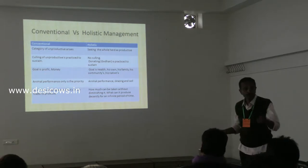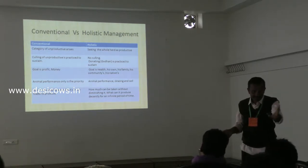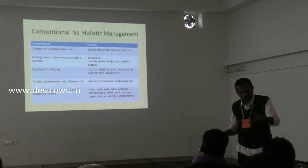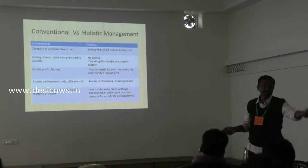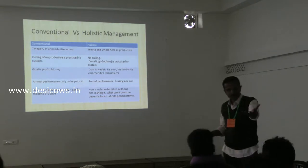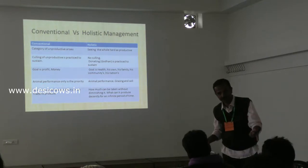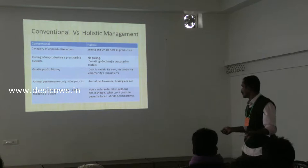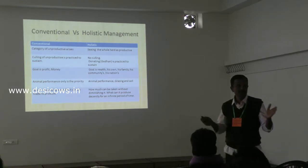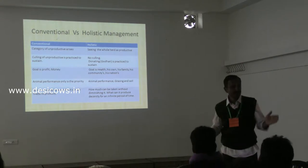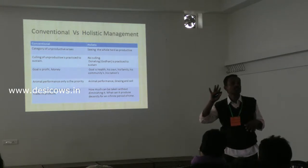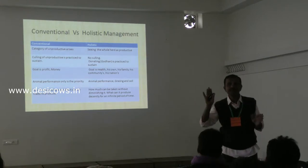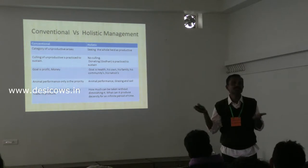In conventional thinking: how much and how quickly can we produce? But in holistic farming: how much can we produce without diminishing the resource? The plant or the animal you are using should not die because you have taken something out of it. How long can we sustain production? In conventional farming, the cow lives only for 6 years. When they are not stressed, they live 15 to 25 years. We are losing 10 years of productivity because of conventional practices.